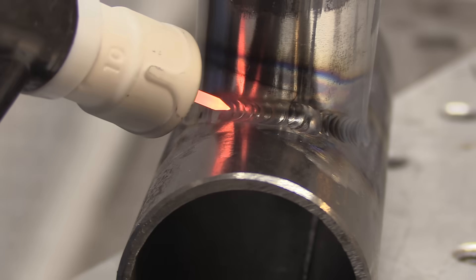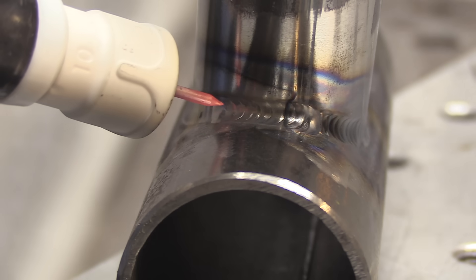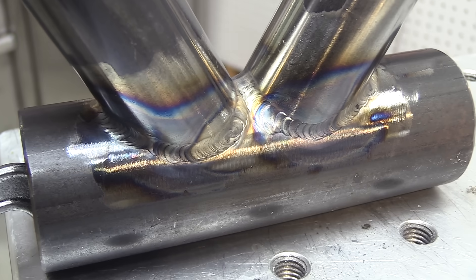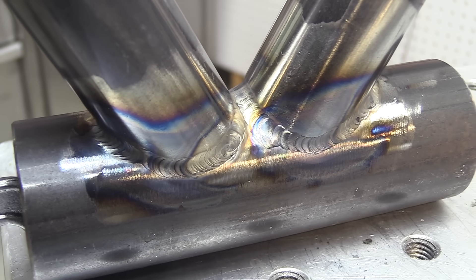Sometimes you can switch over to a really small diameter cup to get in tight angles, but then generally you lose some shielding. So I think it's better a lot of times just to go with a cup like this with a really long stick out—gets you out of a jam sometimes.